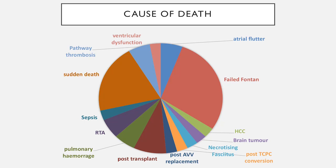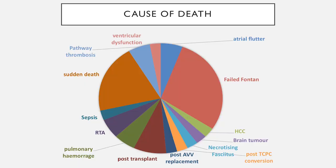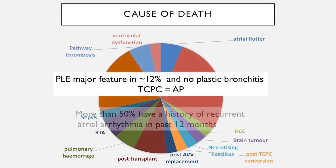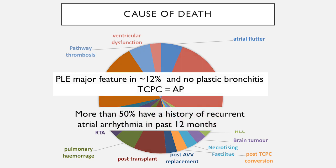Sudden death, by its nature, comprises cases that died in the community where we haven't been able to define any other cause of death on autopsy. We've had a few patients who've died of pathway thrombosis, which is very sad. We routinely use warfarin in all patients — no aspirin. Most centers in the UK use warfarin, usually from childhood. We have one or two patients on NOACs. Virtually all of the patients who died did not have PLE as a major feature, and plastic bronchitis didn't occur regardless of whether they were a TCPC or AP Fontan. More than 50% — including those who died of road traffic accidents — had a history of recurrent atrial arrhythmia within the past 12 months, which seems to be a marker of poor outcome.